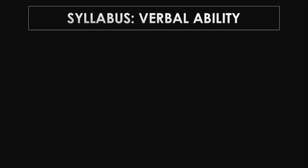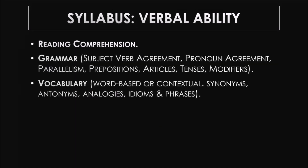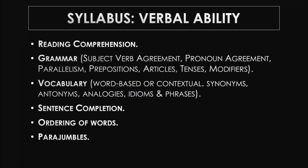Now let's start with the syllabus. First, verbal ability. Reading comprehension is one of the question types. There is grammar and vocabulary — vocabulary can be word-based, where they give you a word and ask for its synonym or antonym, or contextual, where they give a sentence, underline a word, and ask for its synonym or antonym according to the context. Other topics include sentence completion, ordering of words, para-jumbles, error detection and correction — where they give you a sentence or parts of sentences and you have to identify or correct the error.